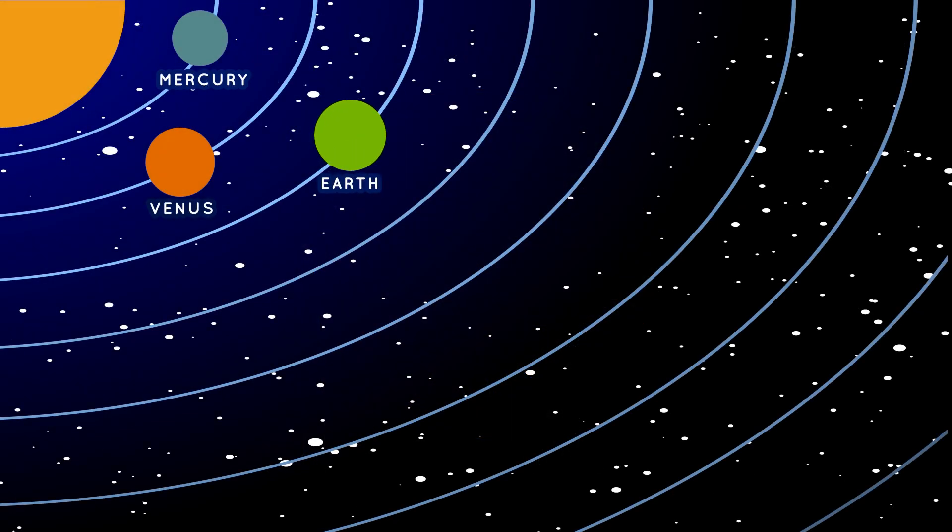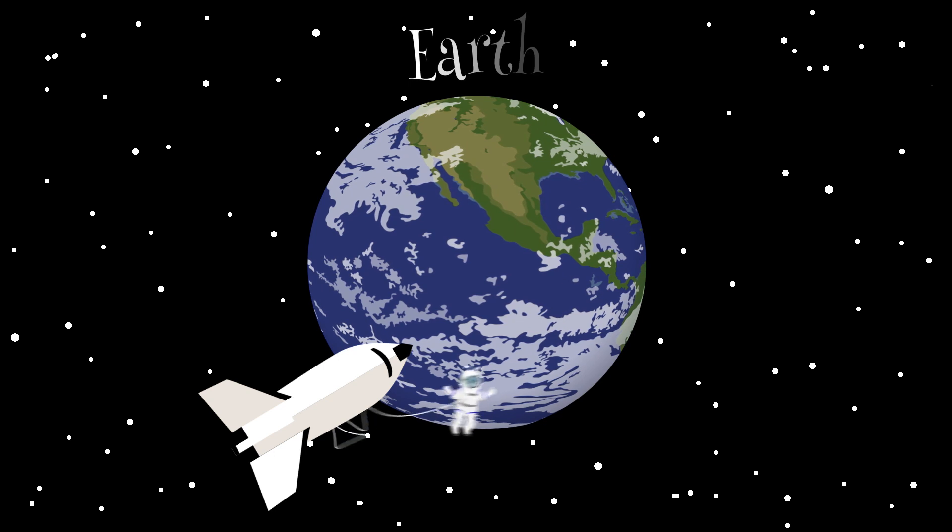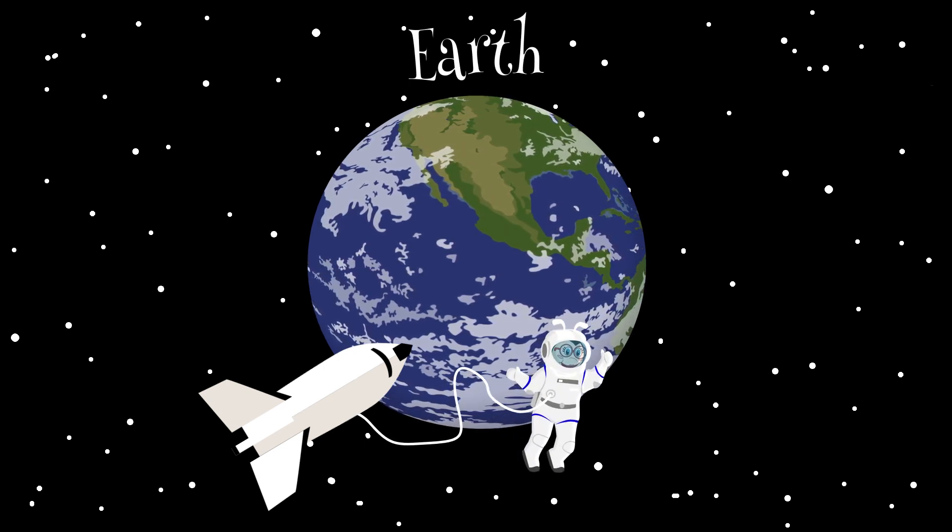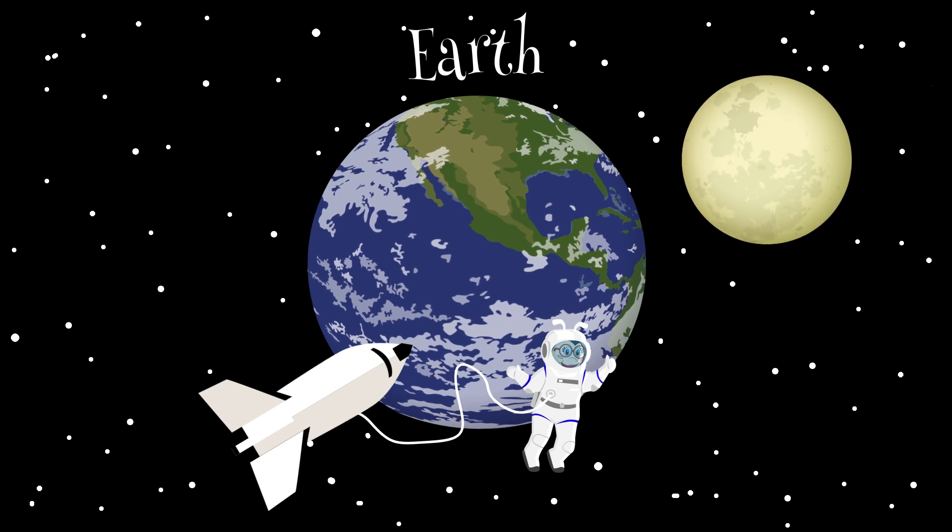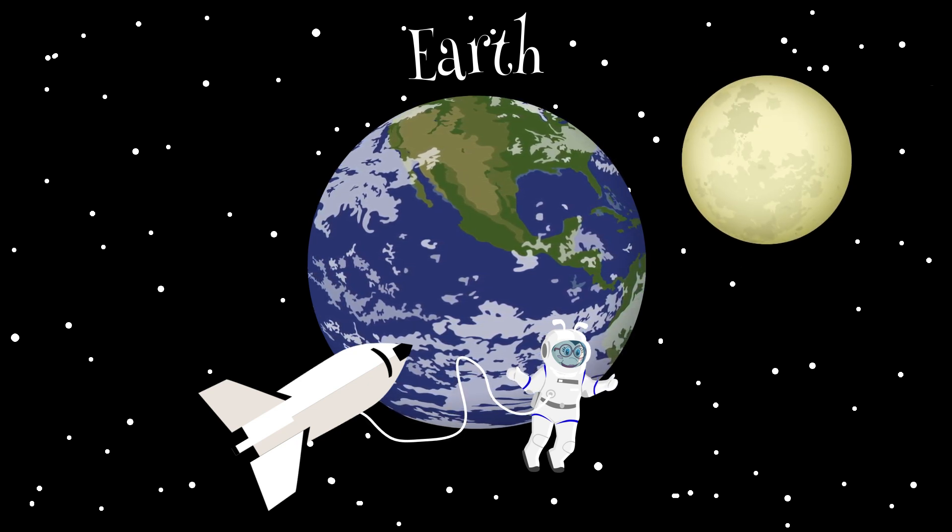Our Earth is the third planet from the sun. This is the planet that we all live on. The Earth is the only planet circling our sun on which life exists that we know of. Our Earth has one moon. The moon's distance from the Earth is about 239,000 miles.